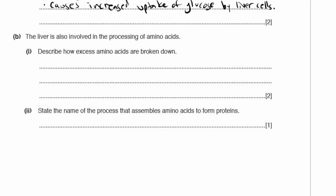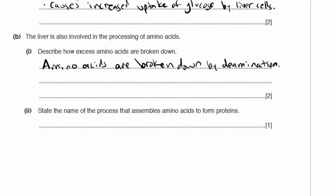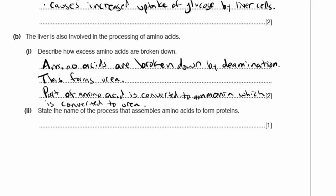The liver is also involved in processing amino acids. Describe how excess amino acids are broken down: by a process called deamination, which removes the amine group. Part of the amino acid is converted to ammonia, which is then converted to urea. State the name of the process that assembles amino acids to form proteins: that is called protein synthesis.